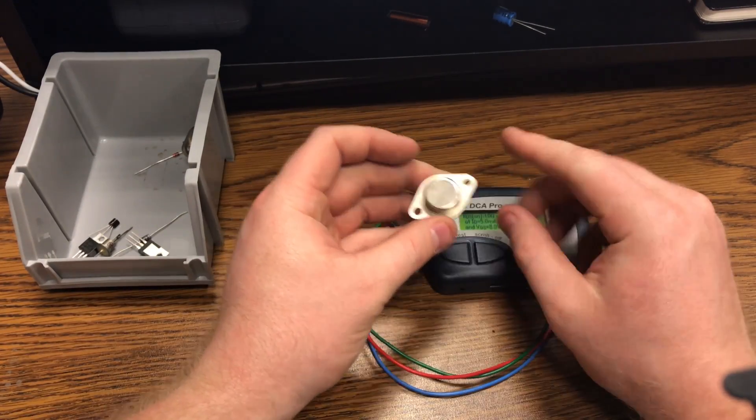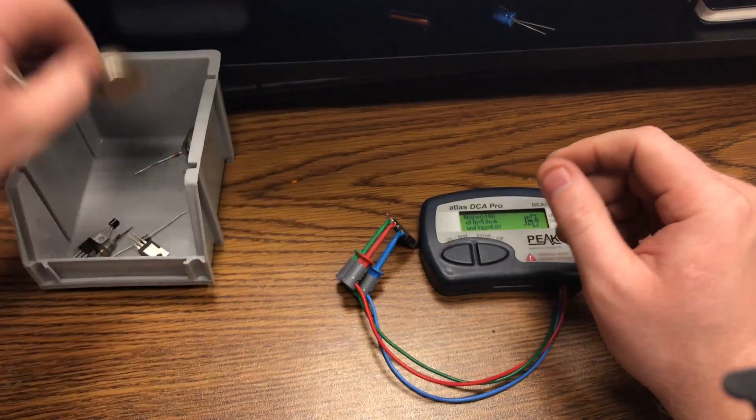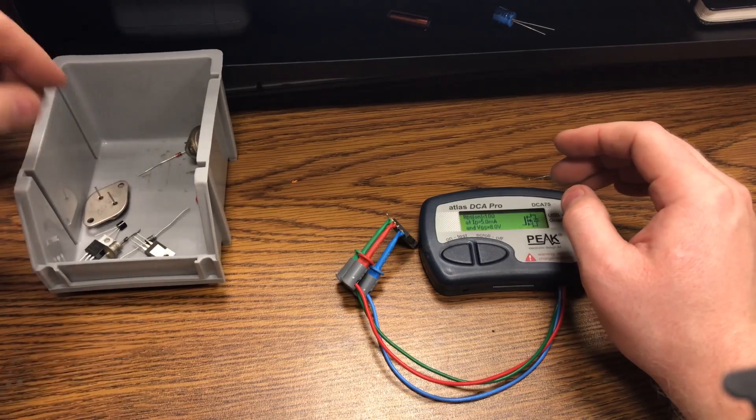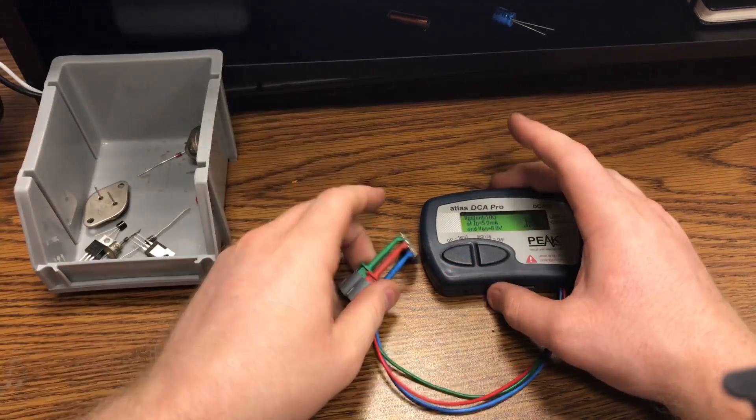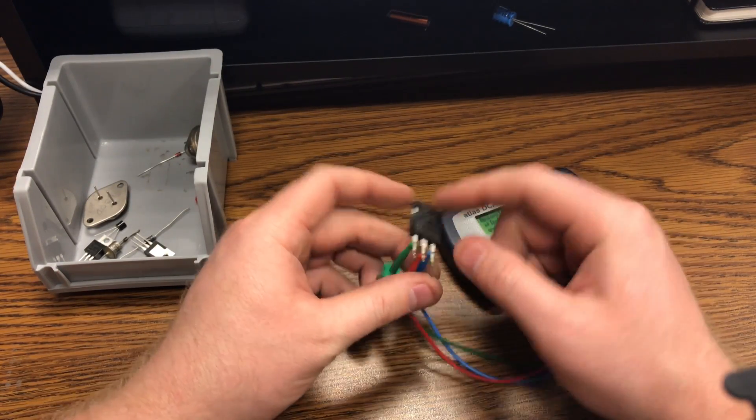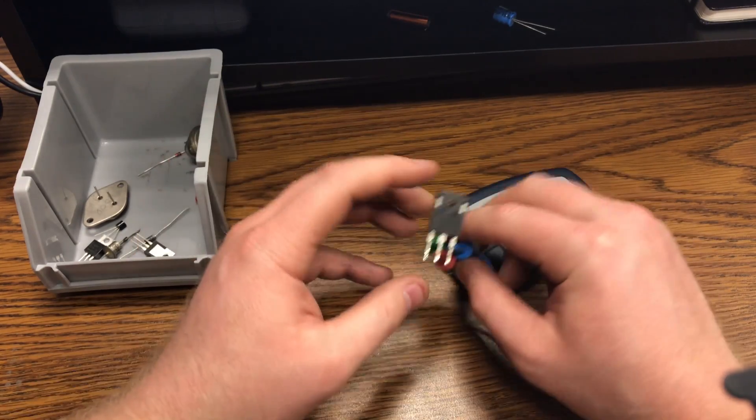So you could basically use this to make your own datasheet if you had parts that didn't have any markings on them and you don't know where they came from and you don't want to throw them away. So you can just kind of organize your parts or even just test if your parts are good or not.